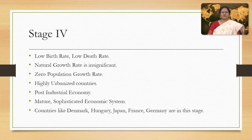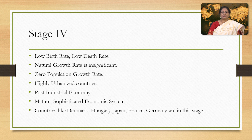The last stage, or stage 4, is known as the stage of stable population. In this stage, birth rate is low and death rate is also low. Natural growth rate is insignificant — it is also known as zero population growth. These countries are highly urbanized and the economic system is matured and sophisticated. Denmark, Hungary, Japan, France, and Germany are in this stage.